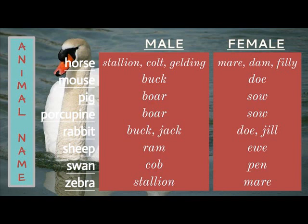A male sheep is a ram, a female sheep is a ewe. A male swan is a cob, a female swan is a pen. A male zebra is a stallion, a female zebra is a mare.